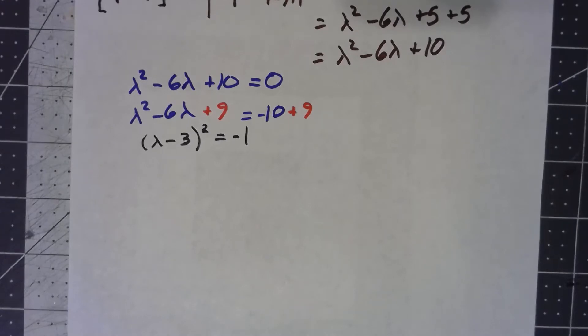And so we've got lambda minus 3 squared is negative 1. If we only care about real numbers, we'd say, well, there's no solution to that. There is no real number that when we square it, we get negative 1.